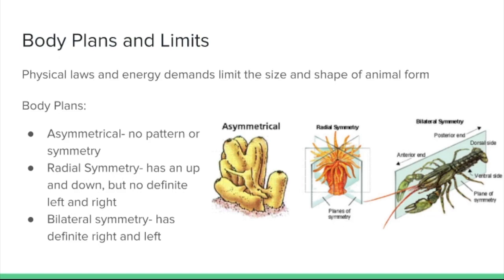There are some different body plans that we see in the animal kingdom. The asymmetrical body plan is something that you'd see in something like a sponge, and it doesn't have any pattern or symmetry at all. Radial symmetry is common in aquatic organisms like the ones that attach to the bottom of boats or grow onto rocky surfaces, something like a starfish where it has a definite up and down but you can't really distinguish between the left and the right.